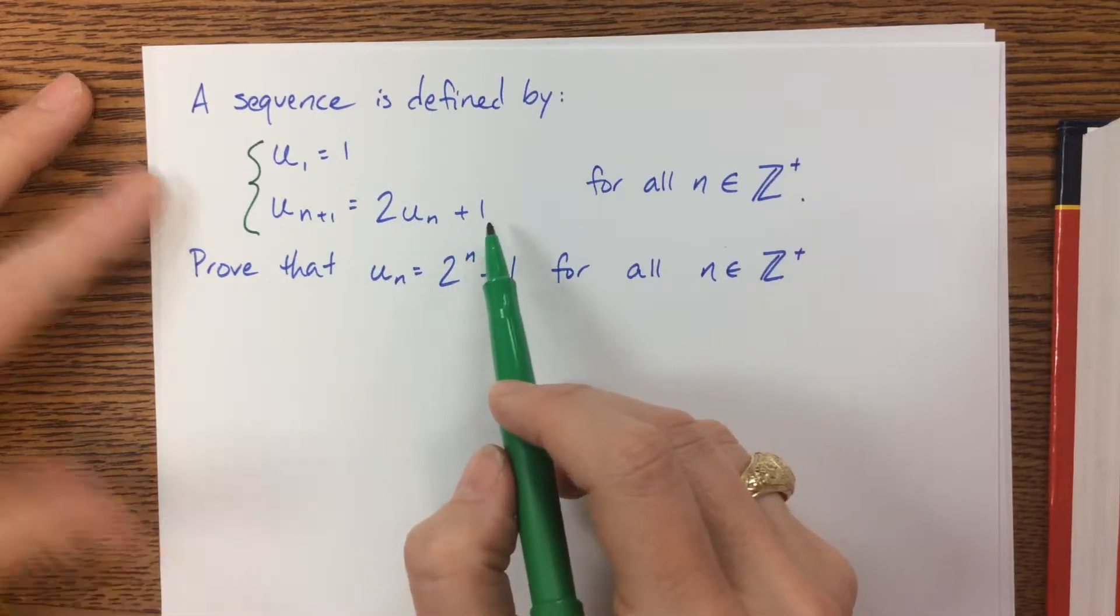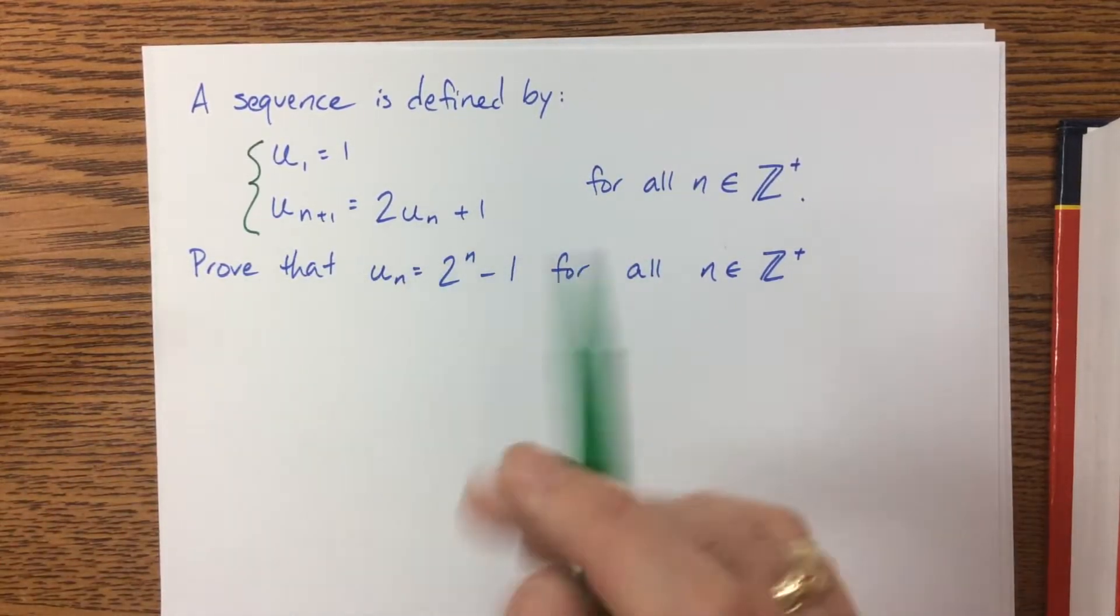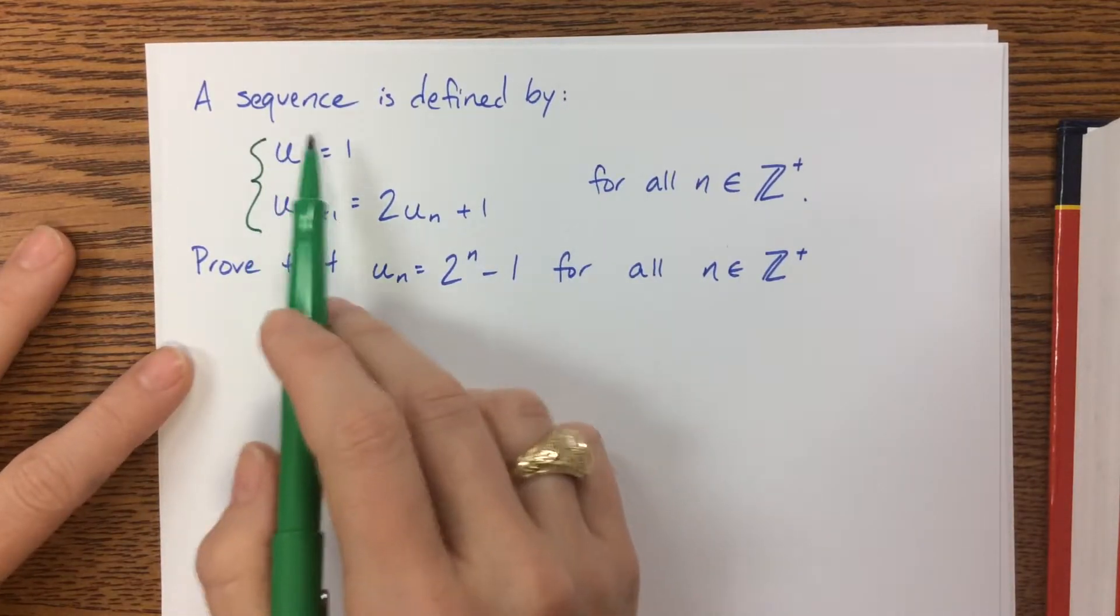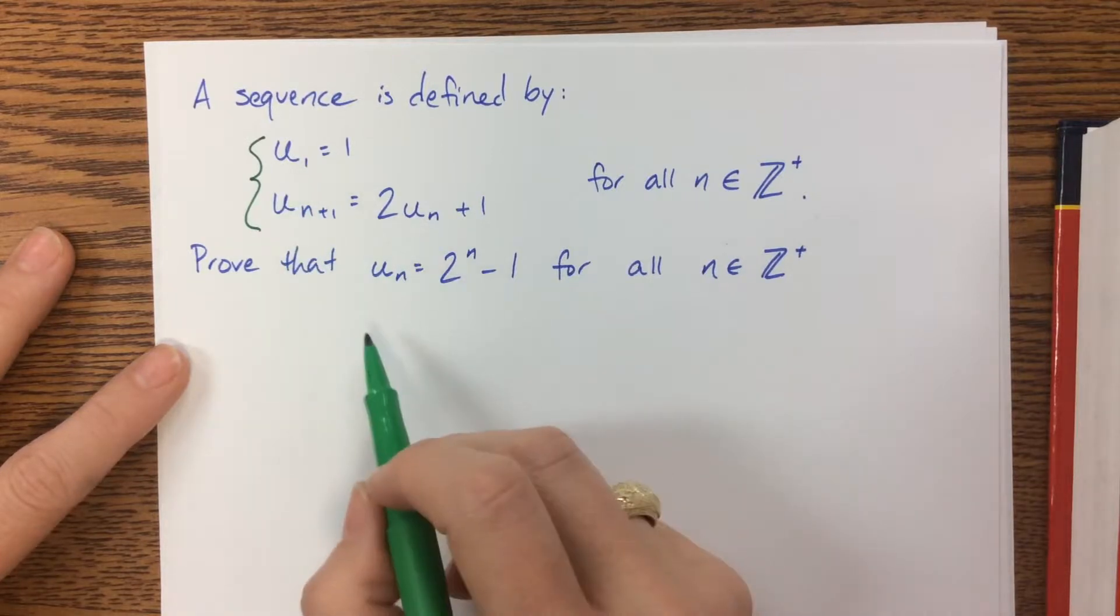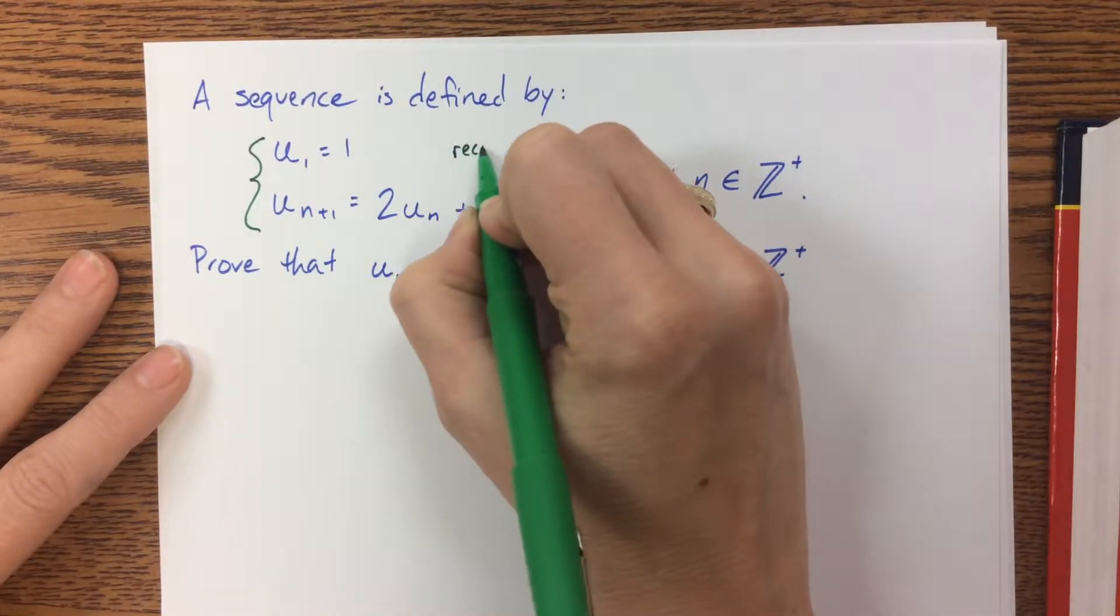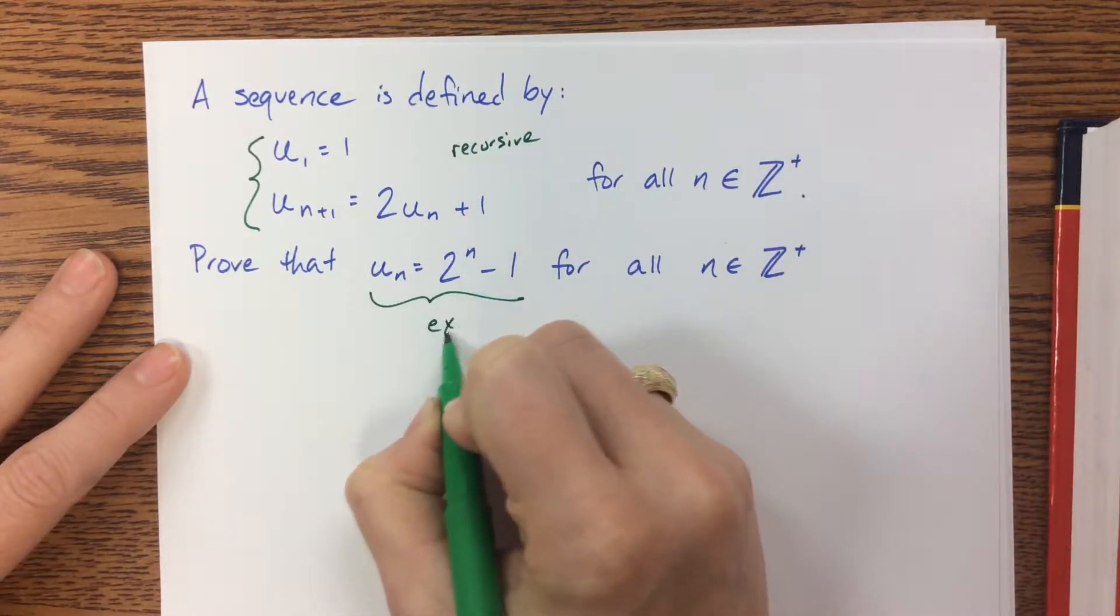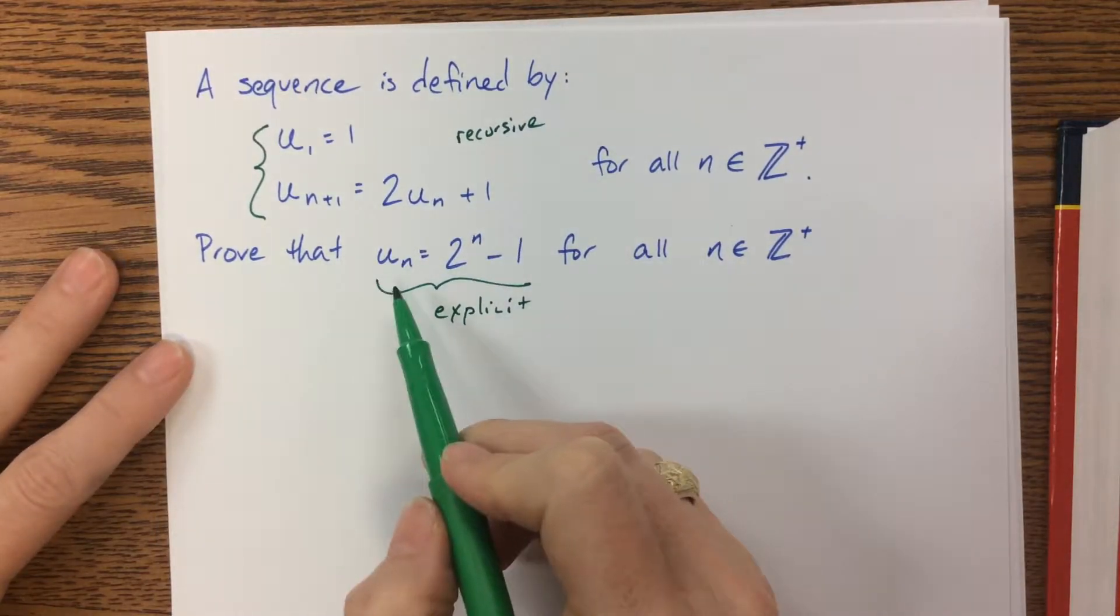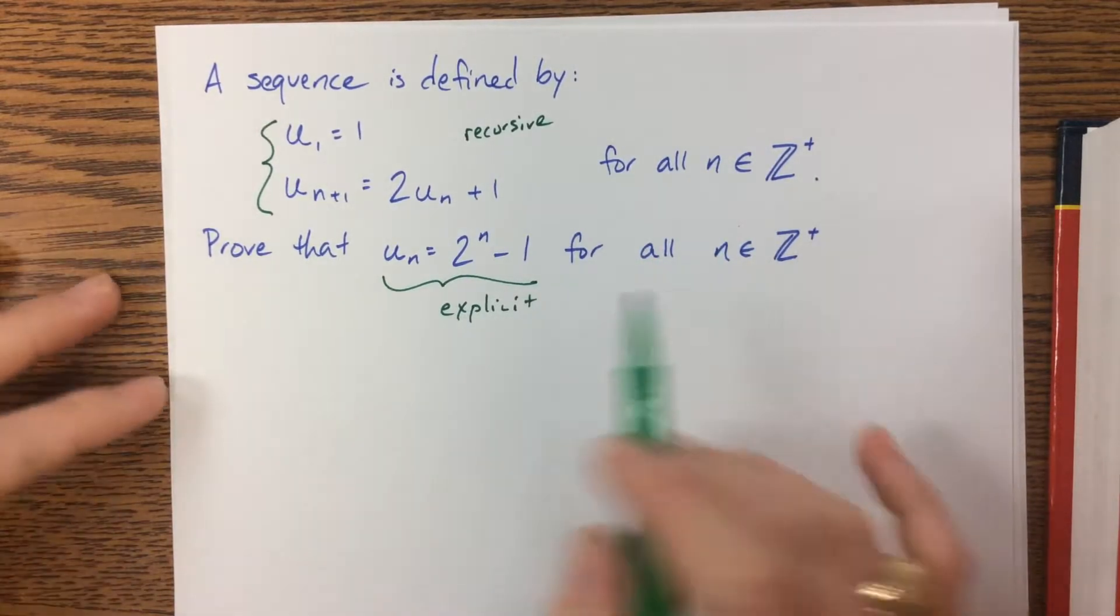You'll notice this is neither arithmetic nor geometric. It kind of mixes the two and therefore becomes neither of them. What they're wanting us to do is prove that this recursive formula can be written with this explicit formula. Notice that this is u_n = 2^n - 1, and we're doing this for all positive integers.